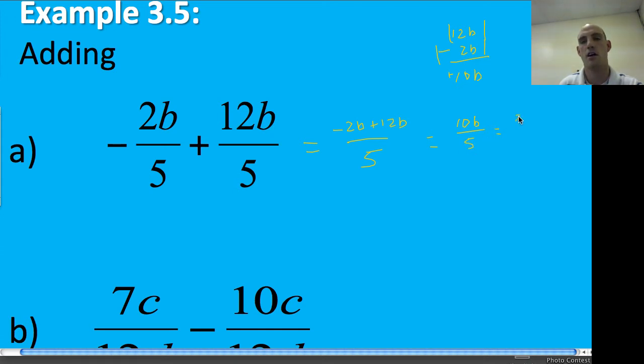So it's going to be 10B over 5. You're thinking to yourself, oh yeah, 10 is 2 times 5. That's good. Cross out that 5, you get 2B. That's all there is to it.